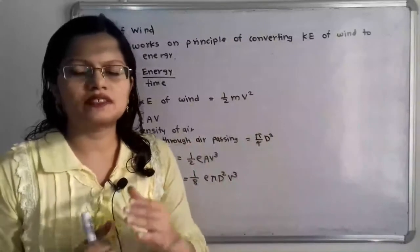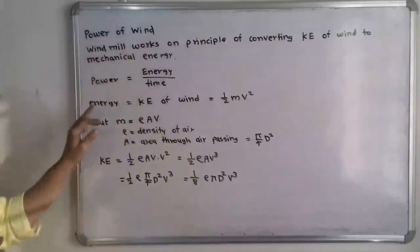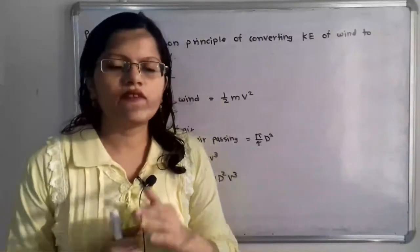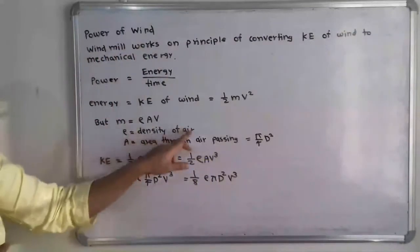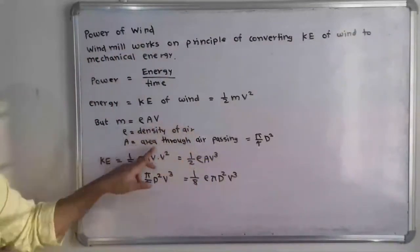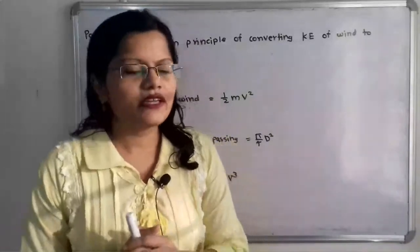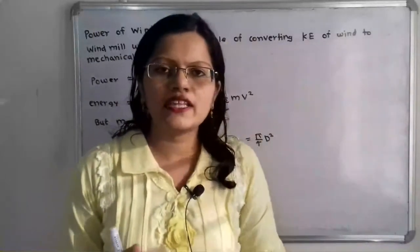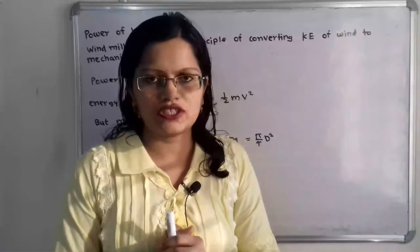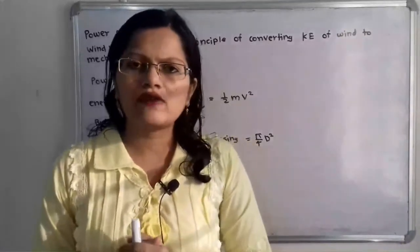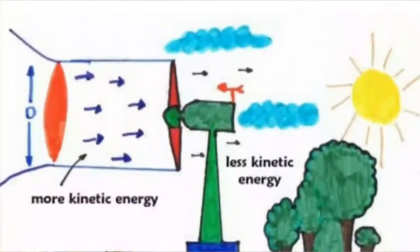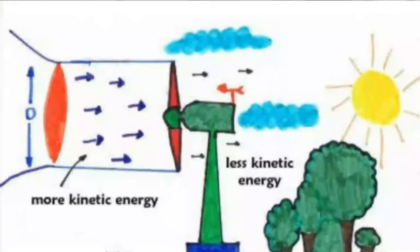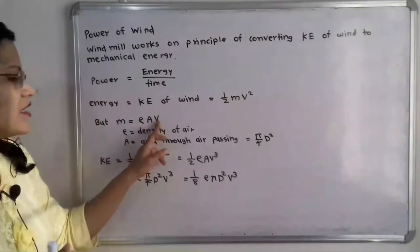Here m is mass and v is velocity. Mass is equal to rho (ρ) into area (A) into velocity (v), where rho is the density of air and A is the area through which air is passing. In the case of a windmill, this area is circular in cross-section with diameter d, so area = π/4 · d².